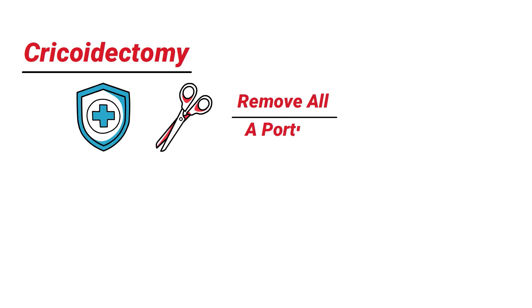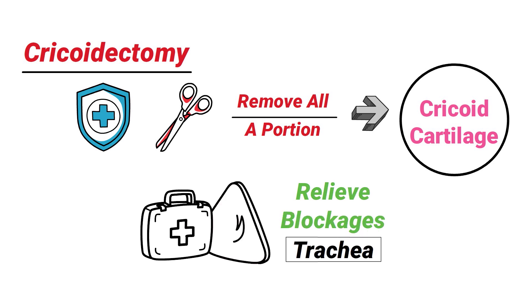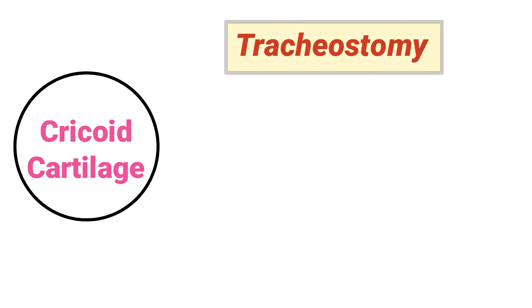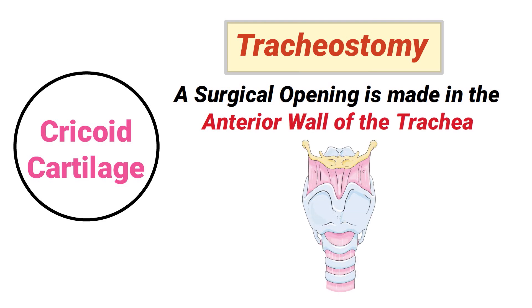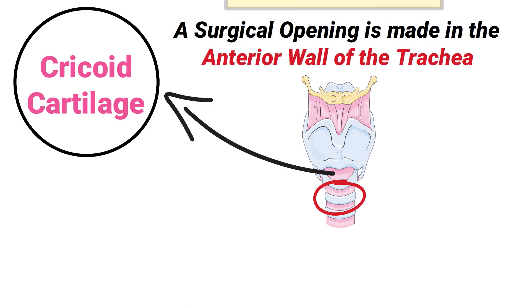A cricoidectomy is a medical procedure that can be performed to remove all or a portion of the cricoid cartilage, which can help relieve blockages within the trachea in severe cases. Also note that during a tracheostomy procedure, a surgical opening is made in the anterior wall of the trachea and is usually placed just below the cricoid cartilage.